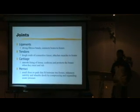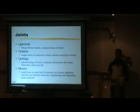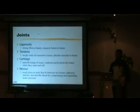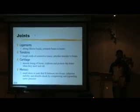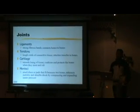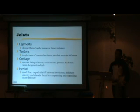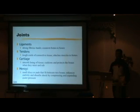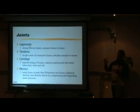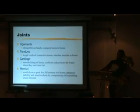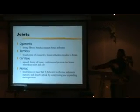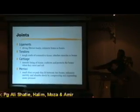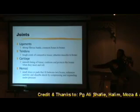Now, joints. These are the names of the joints available in our body. The main ones we need to know are ligaments, tendons, cartilage, and meniscus. Ligaments are what connect bone to bone — for example, the ulnar and radius are connected, and the humerus is connected through a ligament. So, bone to bone is always a ligament.